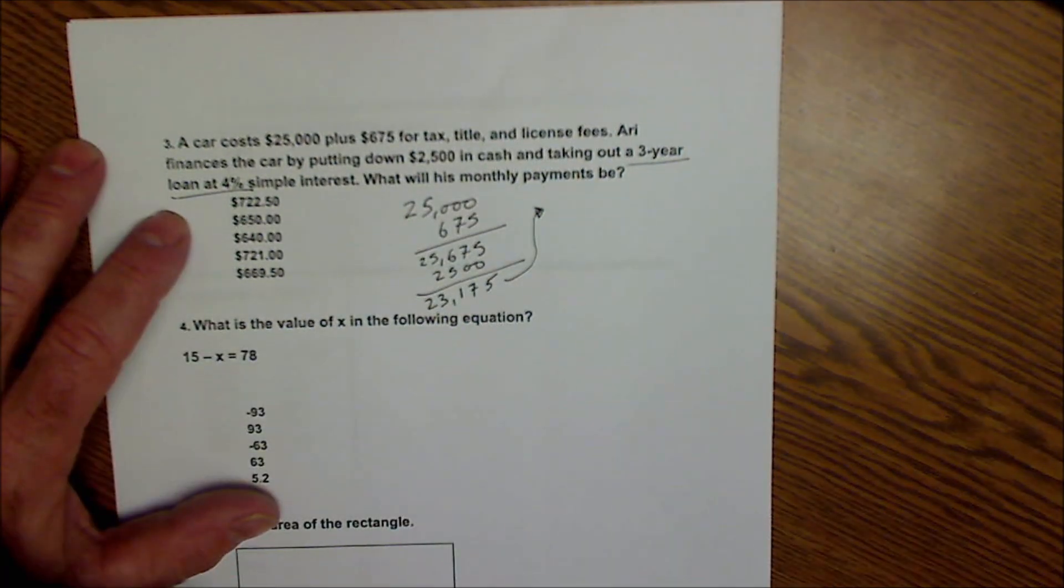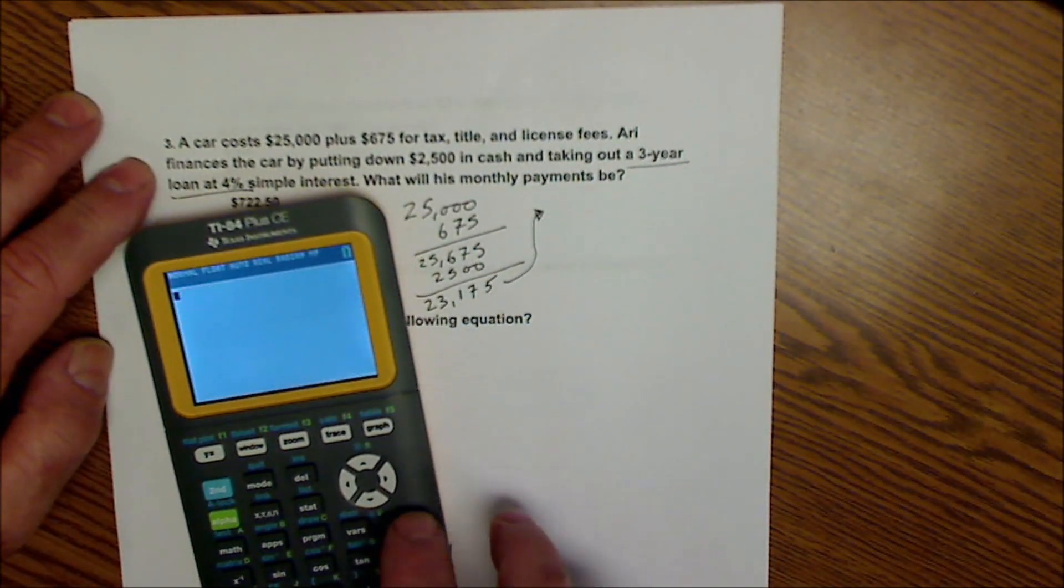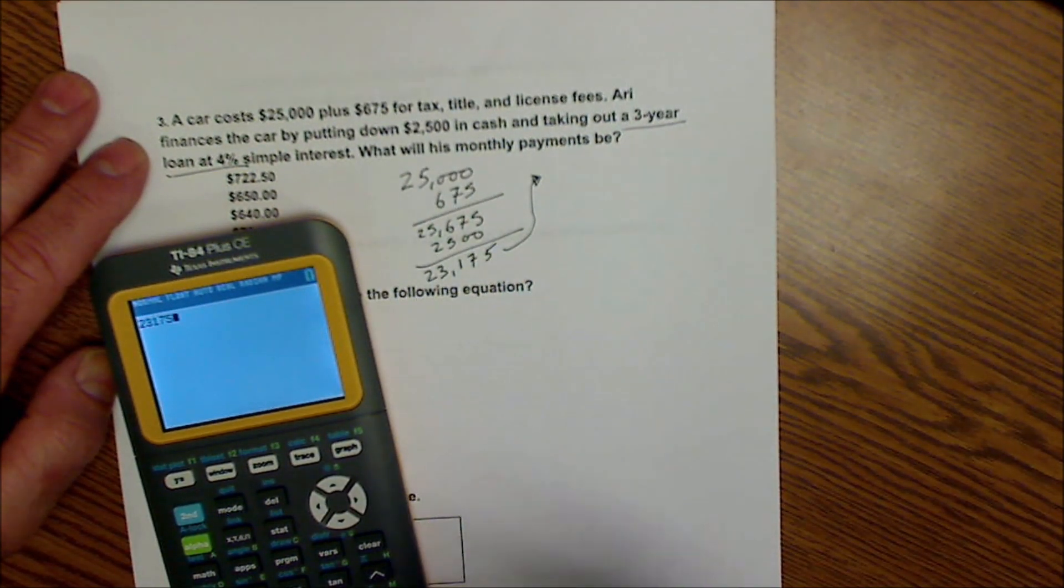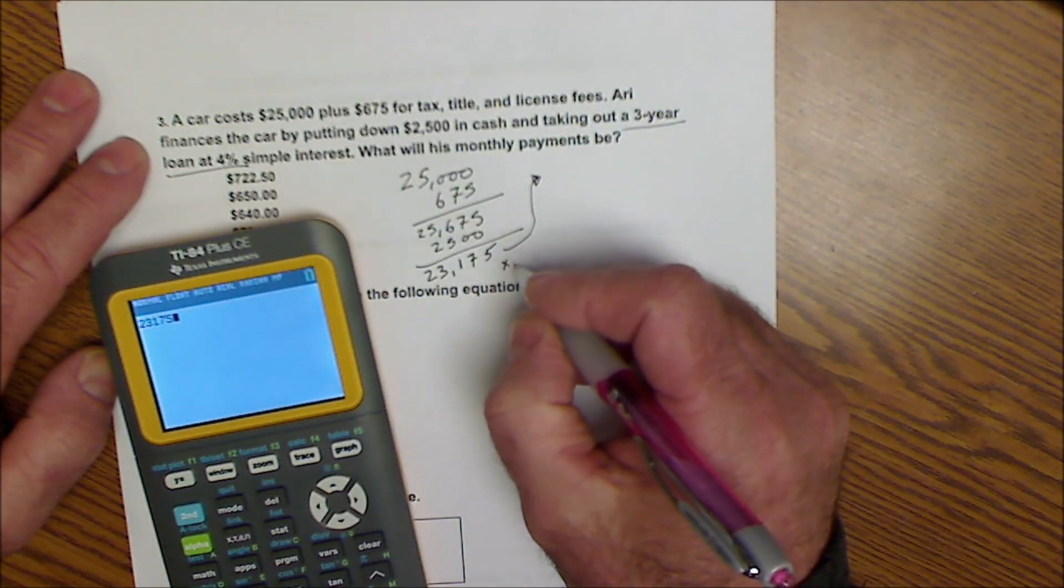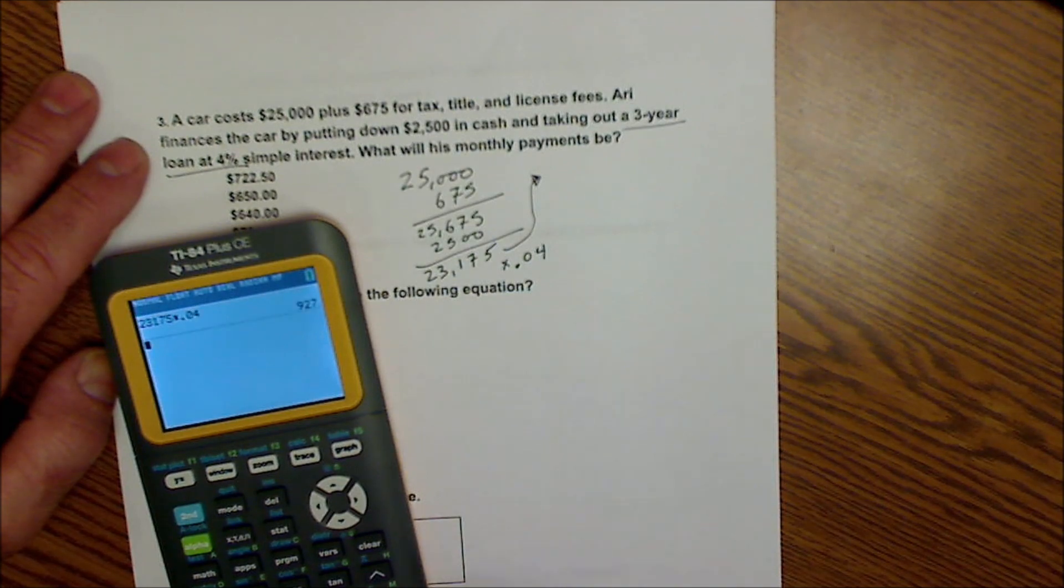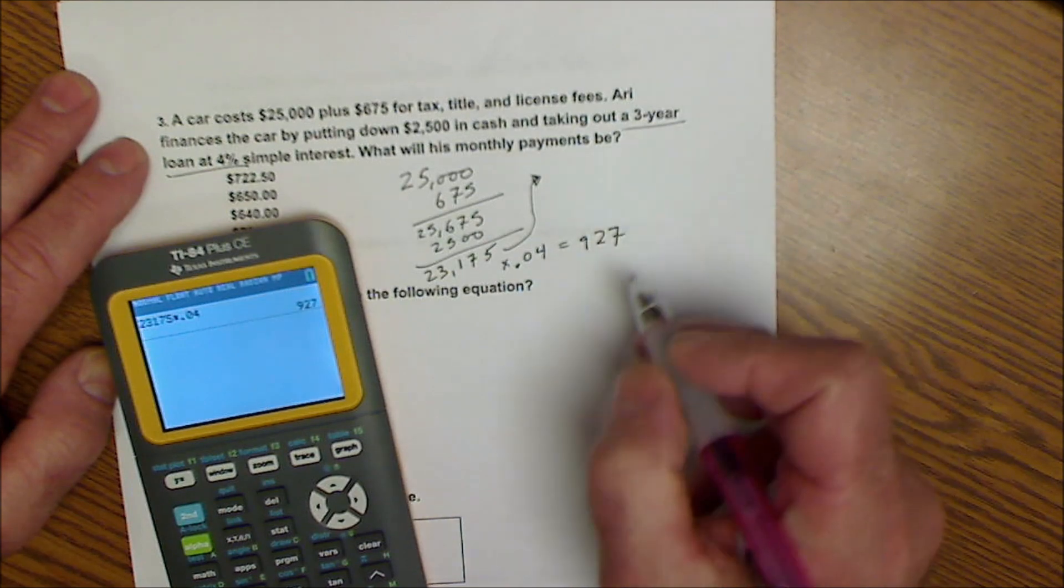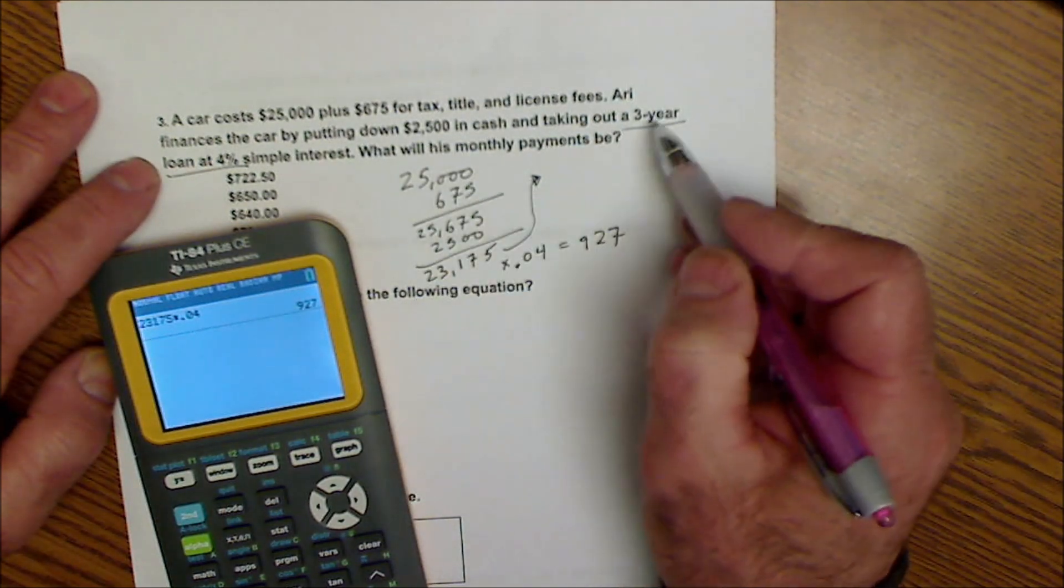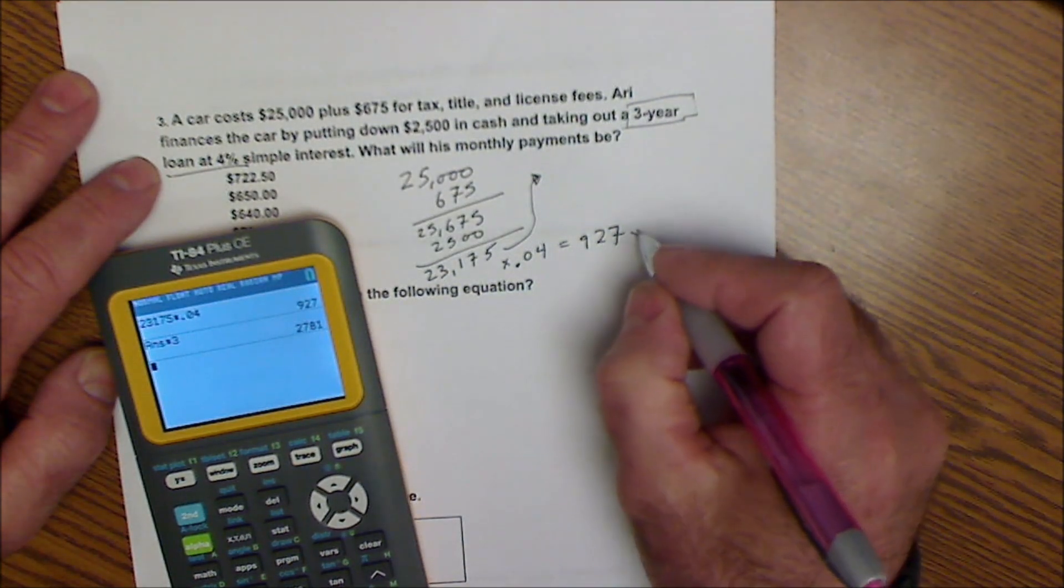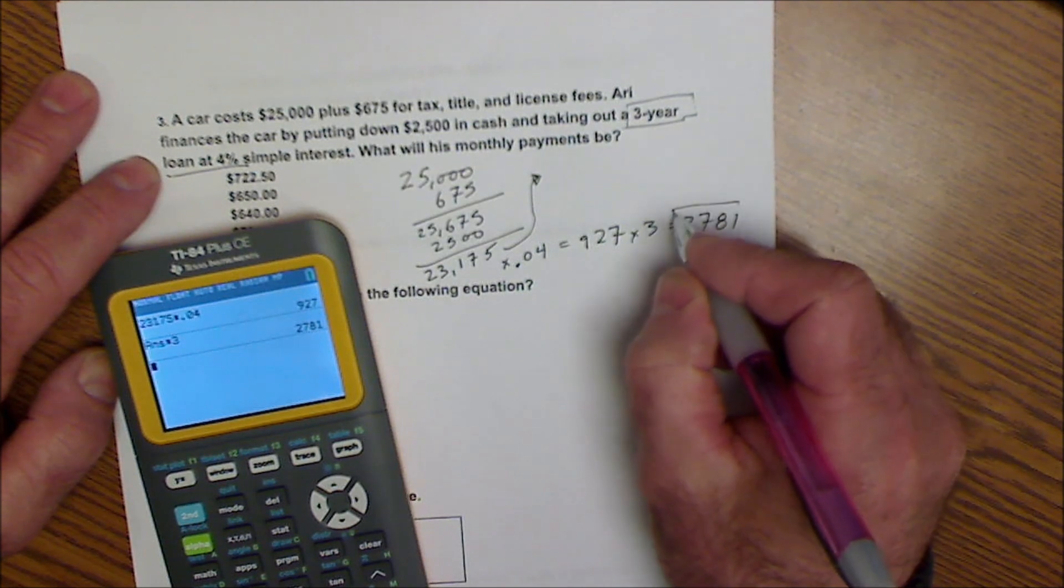So I'm going to take that total of $23,175 times the 4%, or .04, and that'll give me how much interest I pay in a year. So I pay $927 per year in interest, and I do that for three years. So $927 times 3 is $2,781. So that's the total interest payment.